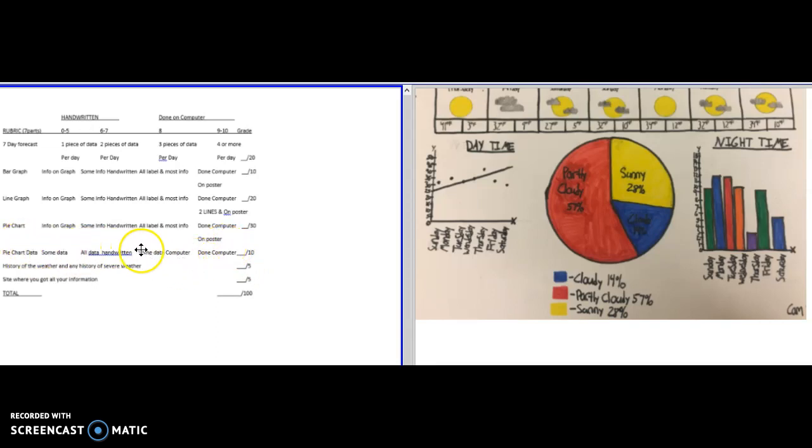The pie chart data itself—we're going to go over the conversions today—the pie chart data is 10 points. Any history of severe weather or any severe weather at all for your city also needs to be included for five points. Cite the websites you used and where you went to get your information, and that's how you get a perfect 100.